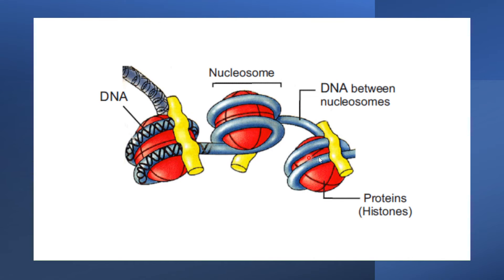To study the structure of a chromosome, we need to go through this diagram. A chromosome is made up of chromatin material, also known as chromatin. Chromatin is a complex material made up of DNA and proteins — mainly histones. The red balls you can see are histone proteins, and the thread-like structure wrapped around them is DNA. DNA wraps around the histone proteins to form round structures called nucleosomes.